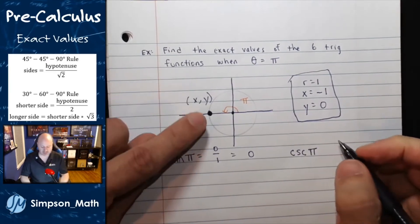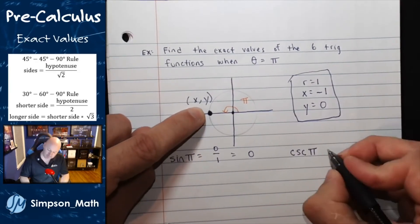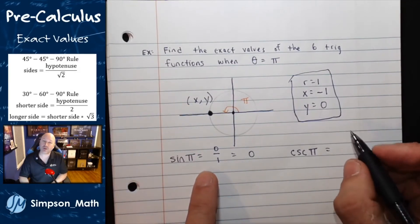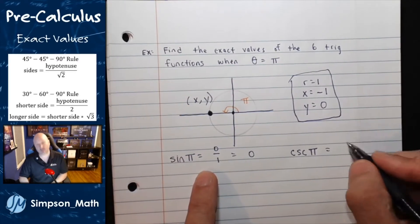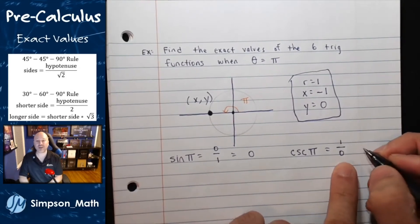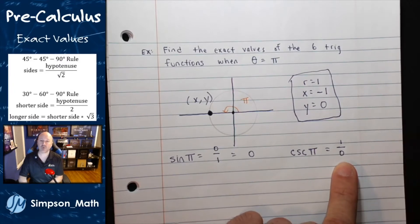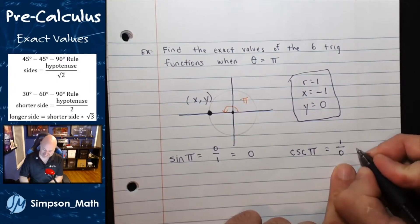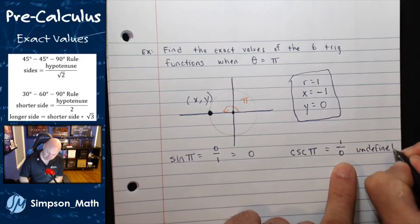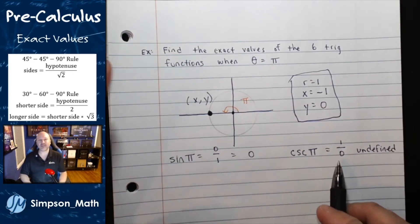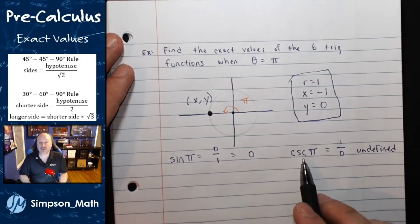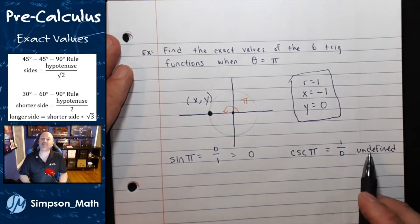Cosecant of pi is describing this situation. It's defined as the reciprocal of sine or the radius over the y. Ooh, what is 1 divided by 0? I don't know either. We say this is undefined. We're not really supposed to be dividing by 0. So, we just say that cosecant of pi is undefined.